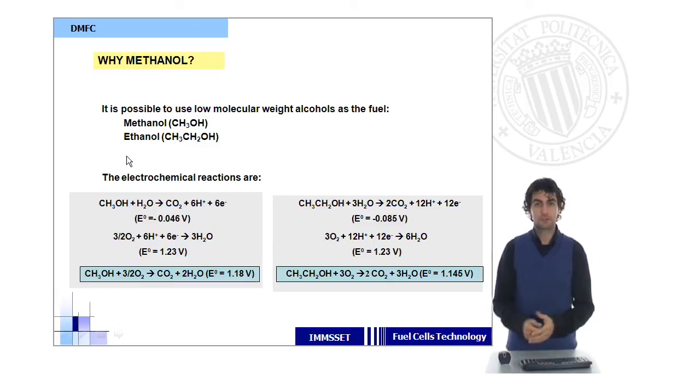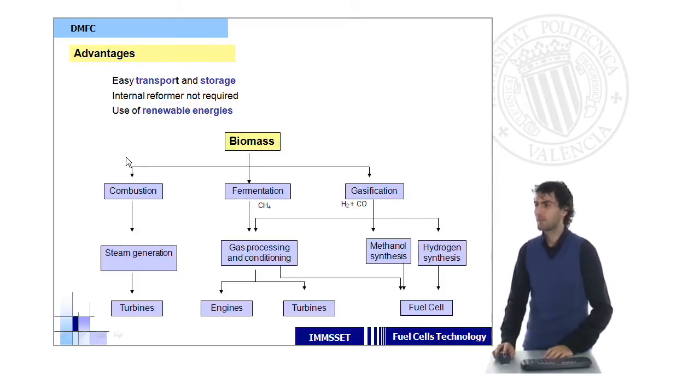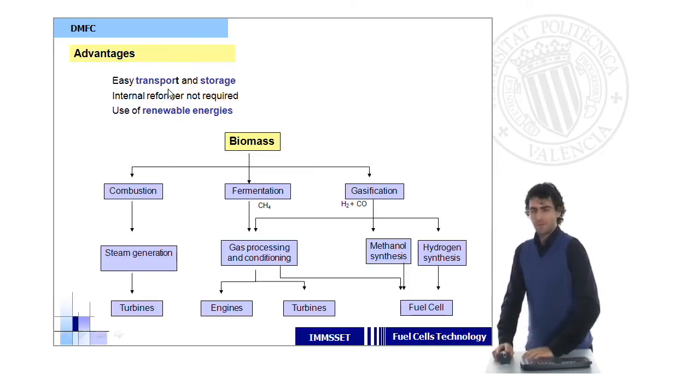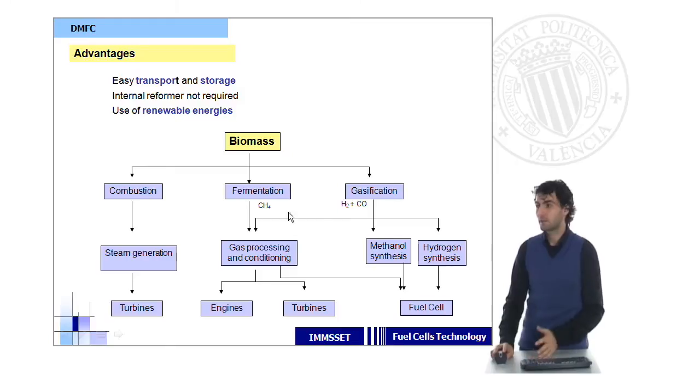Indeed, some of the infrastructures that are already used for gasoline engines will be also available for these methanol or ethanol fuel cells. Well, methanol and ethanol can be potentially obtained from using renewable energies, especially from the biomass, very important, very interesting, by different or through different processes, like combustion, fermentation, or gasification.